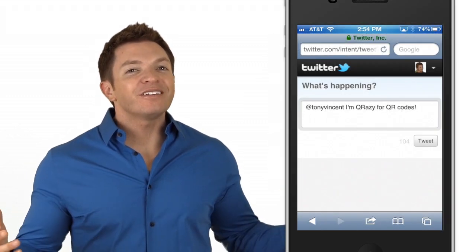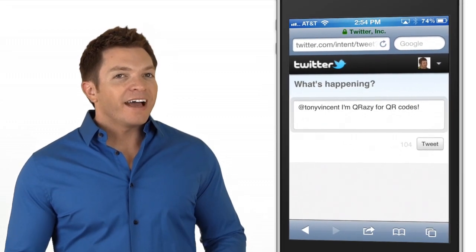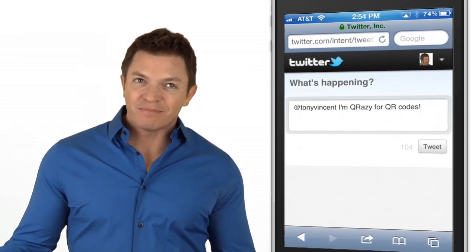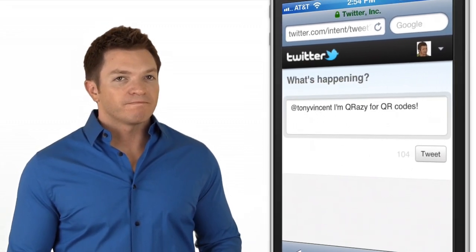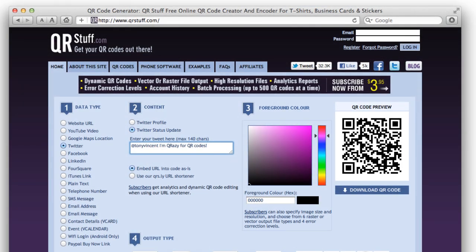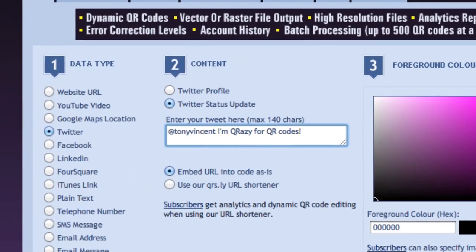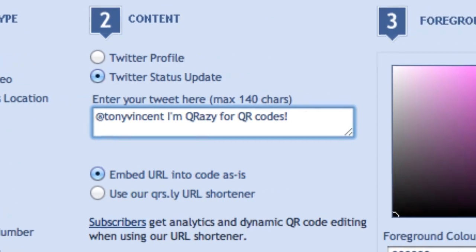QR codes can be used to post to Twitter. In fact, if you are a Twitter user, scan this code. It opens the Twitter website and fills in the tweet for you. All you have to do is tap tweet. It's really fast if you're already logged into Twitter in your web browser. Now, like an email message, you can edit before you send off the message. I made the Twitter update QR code at qrstuff.com. I selected Twitter as the data type and chose Twitter status update for the content and typed in the text of the tweet.